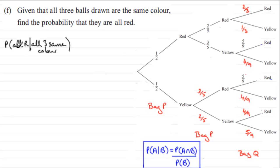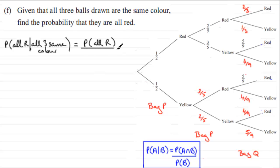I'm going to use this formula here. Event A is that all are red, and event B is that all three are the same color. For both events to occur — if all have got to be red and all three have got to be the same color — then the intersection is simply the probability that all are red.